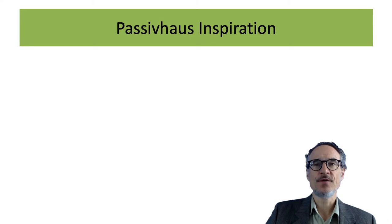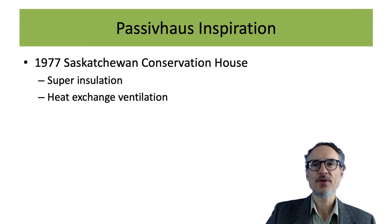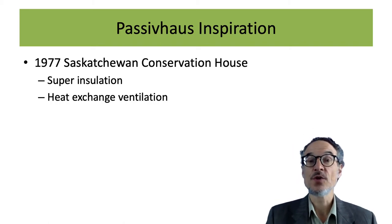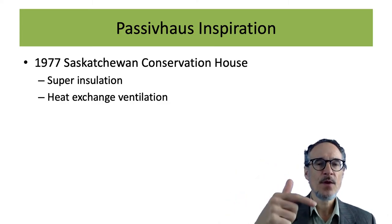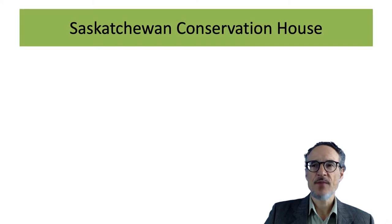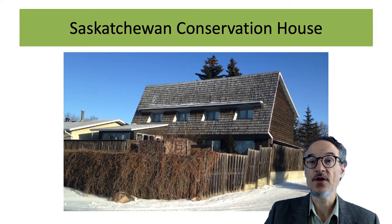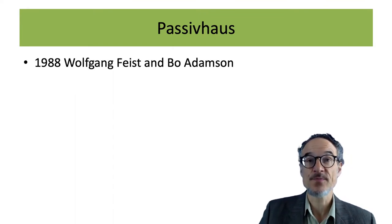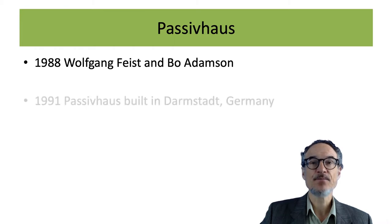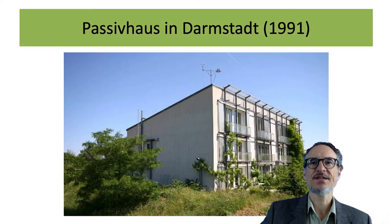The inspiration for Passive House included a house built in Canada in 1977 called the Saskatchewan Conservation House. This used two features of Passive House: super insulation and heat exchange ventilation — the first time they tried to heat up the air coming in with the air going out. The first Passive House building in Europe was built in 1988, and in 1991 the Passive House standard was developed. This is the Passive House in Darmstadt, Germany.